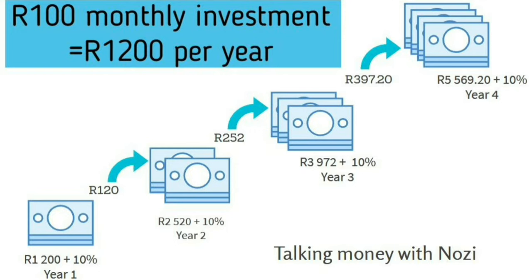So if you invest 100 rand a month, in one year you would have invested 1,200 rand because 100 rand times 12 months is 1,200. And if you're earning 10% per year, in year one, 1,200 plus 10% — 10% of 1,200 rand is 120. So your total balance at the end of year one is 1,320. You start year two with 1,320, then you contribute another 1,200 rand, bringing your total to 2,520. And 10% of that is 252 rand, so your total balance is 2,772 rand.